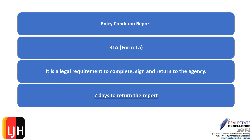The Form 1A is the Entry Condition Report. It is a legal requirement for you to complete, sign, and return the Form 1A to our agency within seven days of taking possession. You are given a copy completed and signed by our agency on or before the day you take possession — usually the day you collect the keys. If you have any questions or concerns during this period, please contact our property manager, then return the report within the seven days set out in the legislation.